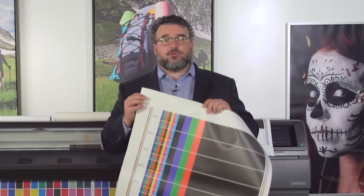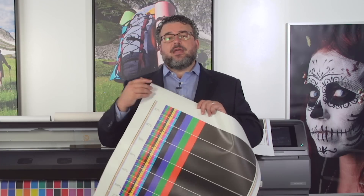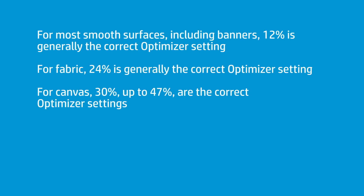Say, banner — this is an 18-ounce scrim banner. The banner starts at 8 passes; it gives you a recommendation, and it also has a default Optimizer setting associated with it. In this case it was 12. For most smooth surfaces, including banners, 12 is generally speaking the right Optimizer setting. You don't have to put less; you don't have to put more. You will get the maximum effect of the Optimizer at 12.